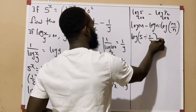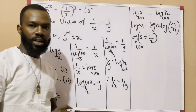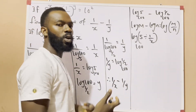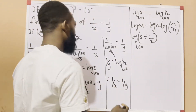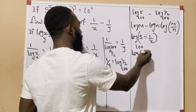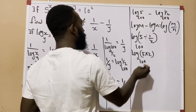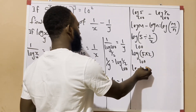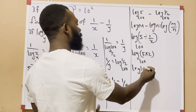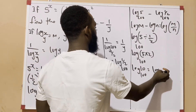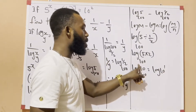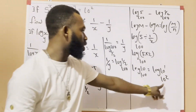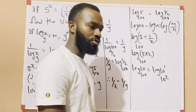Dividing by 1/2 becomes multiplication by 2, so we have log of 5 times 2 to the base of 100. 5 times 2 is 10, so we have log 10 base 100. This can also be written as log 10 base 10 squared, because 10 squared equals 10 times 10, which is 100.